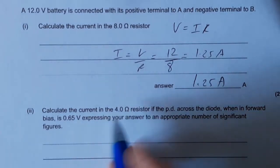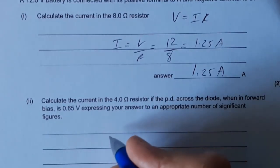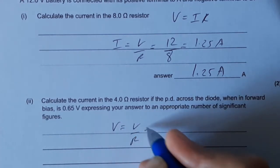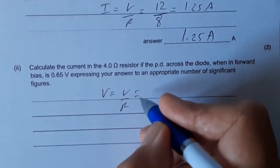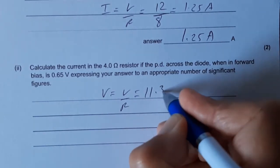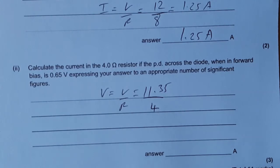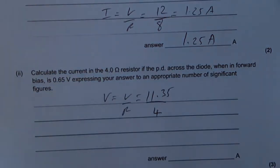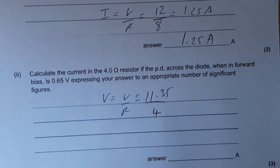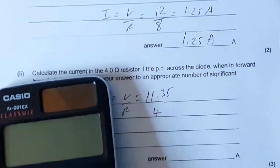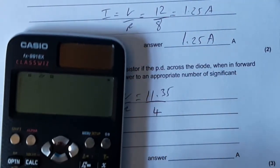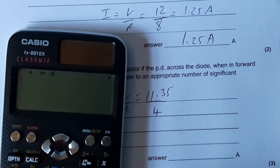So calculating the current, we know we've just said that I is equal to V over R, so it's 11.35 divided by 4. Just looking around for a calculator. Can't quite do that one in my head. 11.35 divide 4 equals...